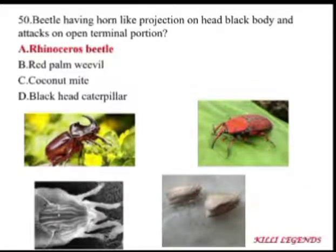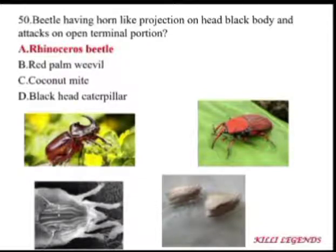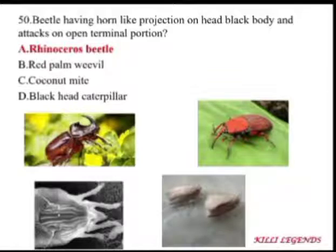Recommendations for red palm weevil: sanitize the field, cut and burn fallen or infested trees, and use root drenching with monocrotophos in water. The eriophyid mite attacks young tender coconuts, causing scab-like symptoms. The black-headed caterpillar attacks fronds and gives the trees a burnt appearance visible from a distance.